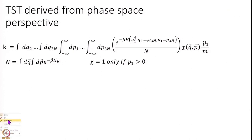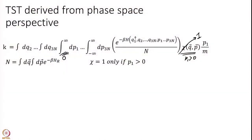This chi will be one only if p1 is greater than 0; otherwise it will be 0. So I change the integral over p1 from 0 to infinity, because if p1 is less than 0, chi will be equal to 0 and will not contribute at all to the integral, and then I can set chi to 1. If p1 is greater than 0 then chi is 1. What I will do next is look at this Hamiltonian H and simplify.